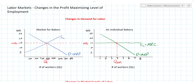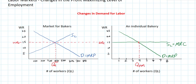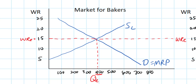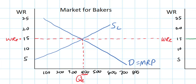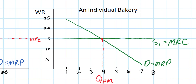In our last lesson we introduced the profit maximizing rule for resource employment, which said that firms should hire workers up to the point where the revenue earned by the last worker hired equaled the cost of hiring that worker, or where MRP equals MRC. You can see that in this graph here. In this market there are 100 bakeries employing 4 workers each, at an equilibrium wage rate of $15. The individual bakery can hire as many workers as it wants from 0 to 8 without changing the wage rate — in other words, it's a wage-taking firm.